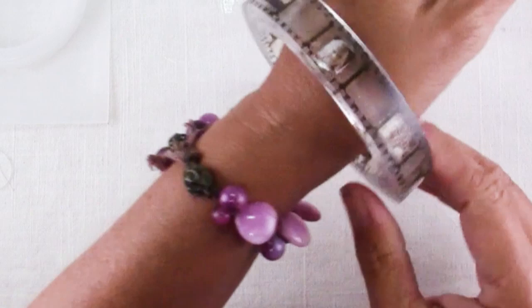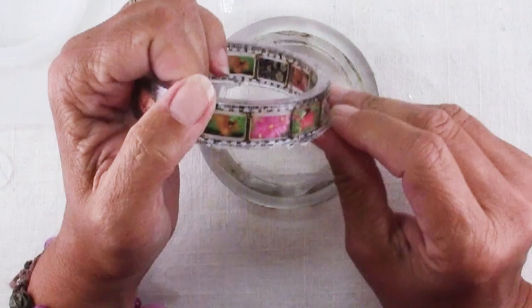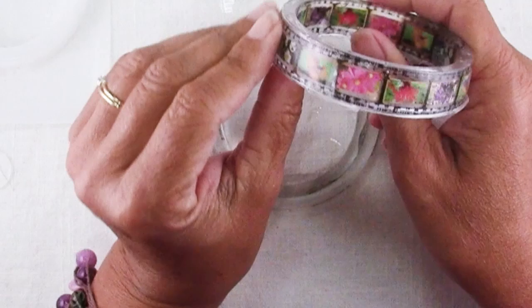If you don't feel like sanding and buffing and hey, when do we, I'll link to an article by Resin Obsession that has several alternate ways of getting a shiny finish on your resin. You can see straight out of the mold, it's a little dull, it isn't shiny, so it definitely needs something if you want that shiny resin.